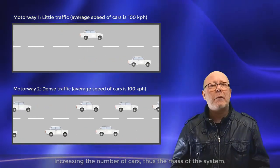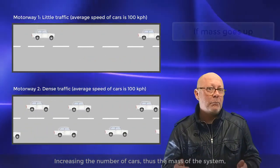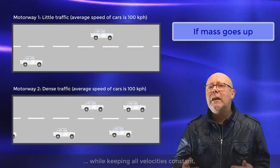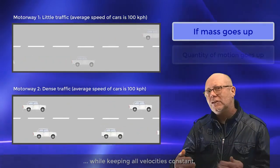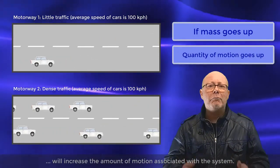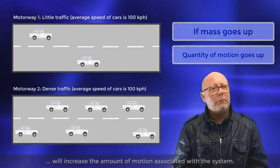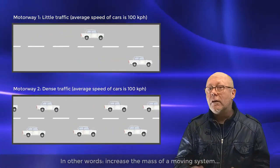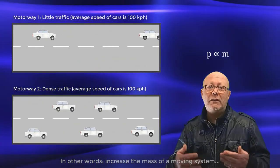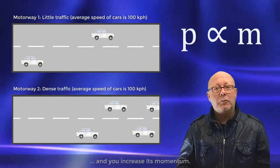So increasing the number of cars, thus the mass of the system, while keeping all the velocities constant, will increase the amount of motion associated with the system. In other words, increase the mass of a moving system, and you increase its momentum.